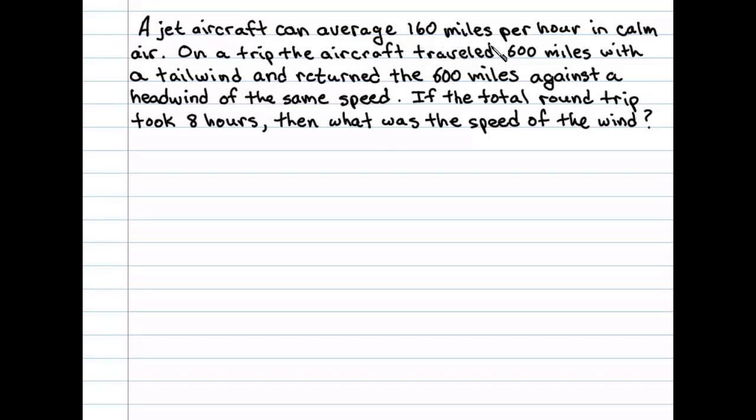A jet aircraft can travel 160 miles per hour in calm air. On a trip, the aircraft traveled 600 miles with a tailwind and returned the 600 miles against a headwind of the same speed. If the total round trip took 8 hours, then what was the speed of the wind?